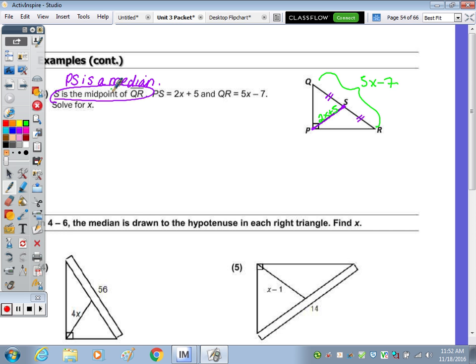The relationship is the median equals half the hypotenuse. So I'm going to substitute for the median, the algebraic expression, the median's PS, two X plus five. So two X plus five equals one half of five X minus seven. You have to take half of five. Half of five is two point five. And it should be minus. Half of seven is three point five.